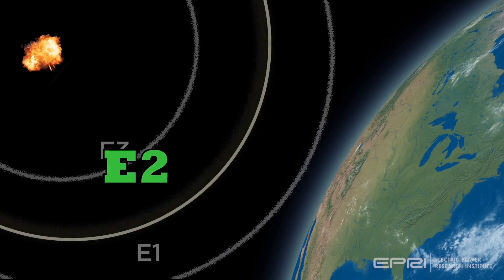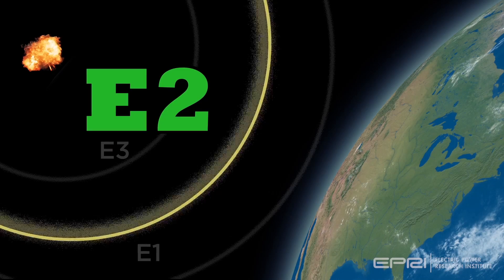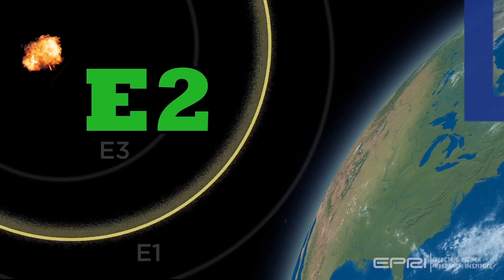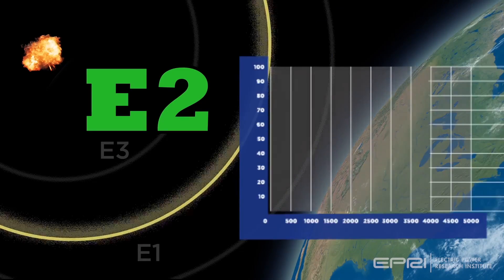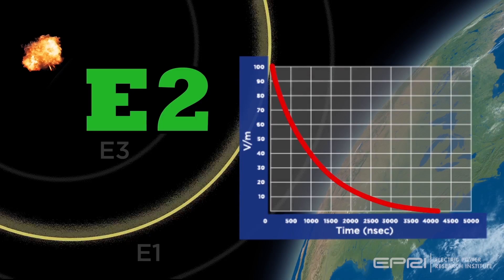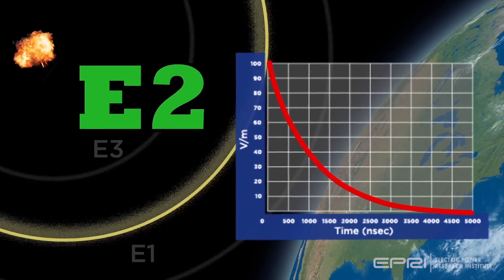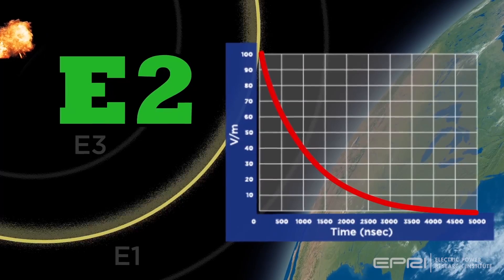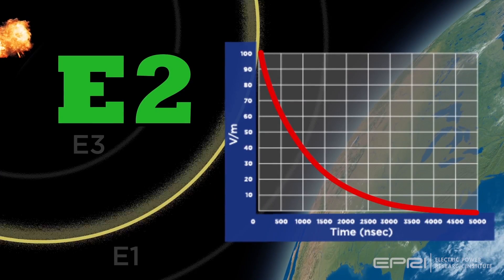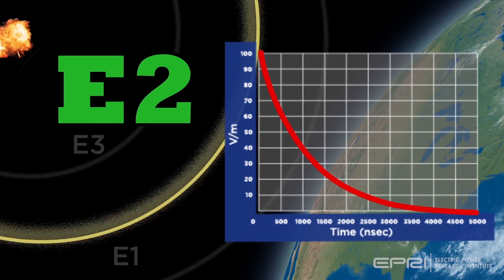The E2 waveform is produced in the intermediate times after the explosion. The timescale here is from one microsecond, one millionth of a second, to about ten milliseconds, ten one-thousandth of a second. The characteristics of the E2 waveform are similar to lightning.